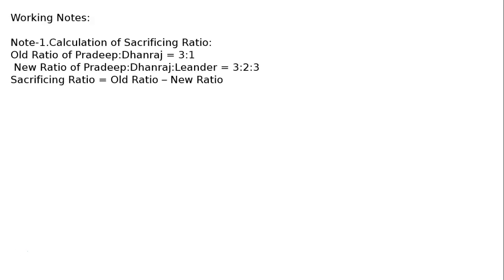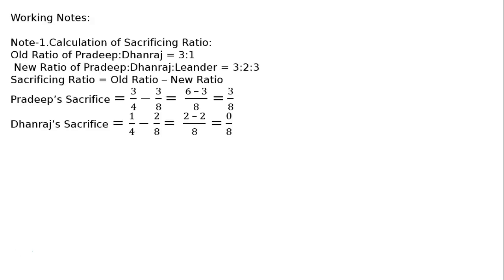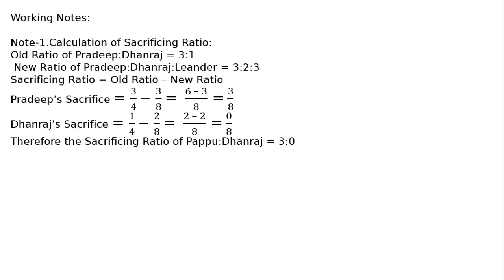Sacrificing ratio is equal to old ratio minus new ratio. Pradeep's sacrifice: 3/4 minus 3/8, that is equal to 6 minus 3 over 8, which equals 3/8. Dhanraj's sacrifice: 1/4 minus 2/8, that is equal to 2 minus 2 over 8, which equals 0/8. Therefore, the sacrificing ratio of Pradeep to Dhanraj is equal to 3 to 0.